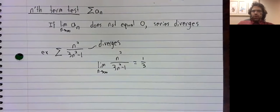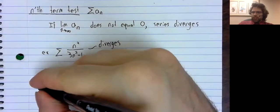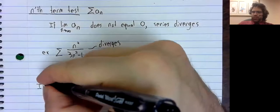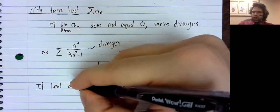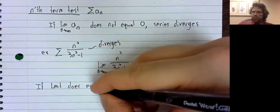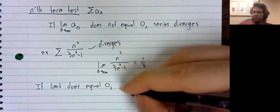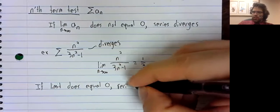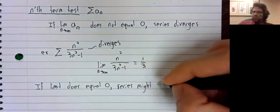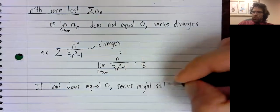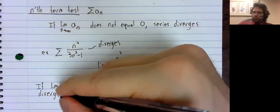However, and this is so important: if the limit does equal zero, the series might still diverge.